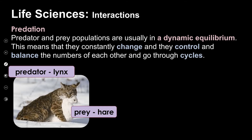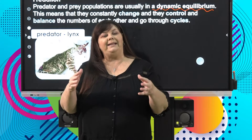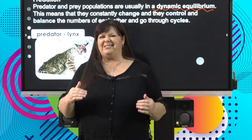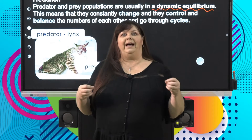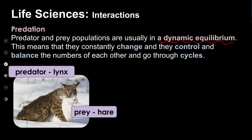Predator and prey populations are usually in what we call dynamic equilibrium. That sounds strange if you break up the term. Dynamic means to change, and equilibrium means to stay the same. They are changing — that's the dynamic part — but they're going to balance each other out, which is where the equilibrium comes into play.